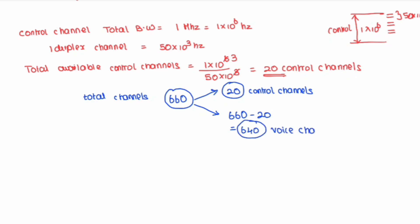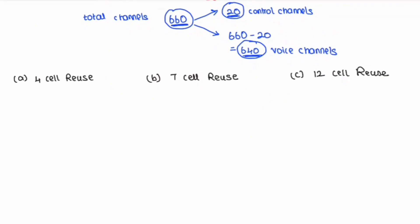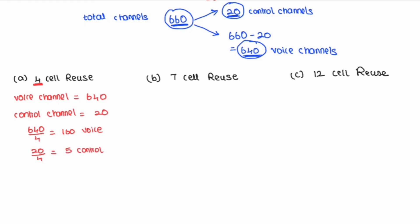For channel distribution with 4-cell reuse: voice channels = 640 ÷ 4 = 160 voice channels per cell. Control channels = 20 ÷ 4 = 5 control channels per cell. However, in practice, each cell has one base station and each base station needs only one control channel. So the practical allocation is 1 control channel and 160 voice channels per cell.